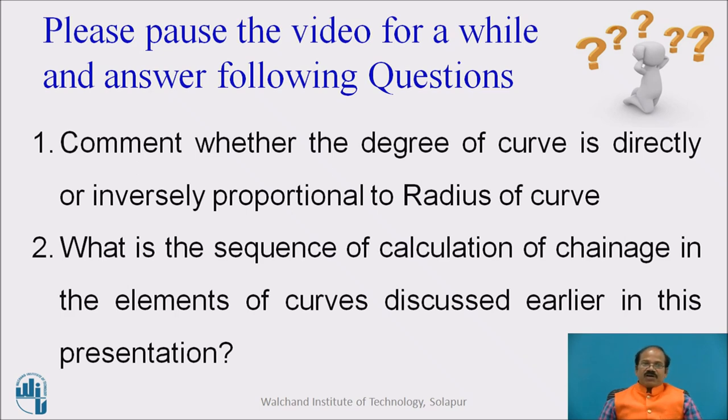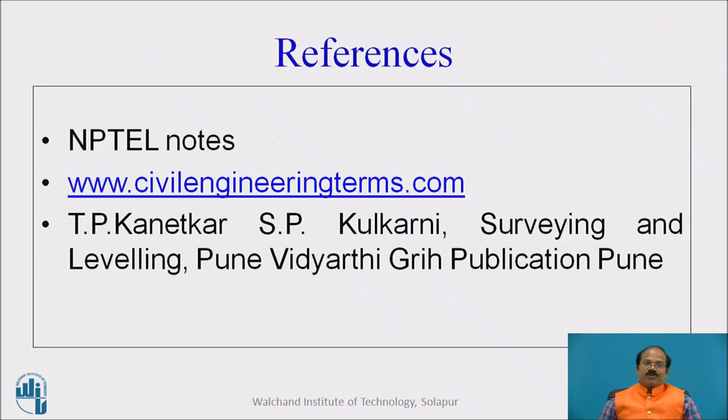The degree of curve is inversely proportional to radius of curve, that is apparent from the previous discussion. Secondly, sequence of calculation of chainage begins with chainage of intersection point minus tangent length gives us chainage of point of curvature, plus curve length gives us chainage of point of tangency.